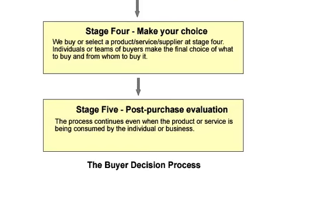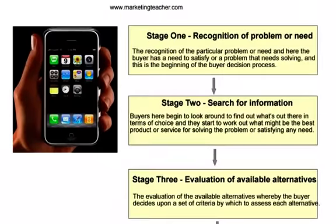Let's look at an example based upon buying a new smart cell phone. The first stage is likely to be that you have a need for communication or access to the internet, or a problem because you cannot interact with friends using social media. The value added by products such as Android, iPhone or Windows Phone and others should satisfy your need or solve your problem.